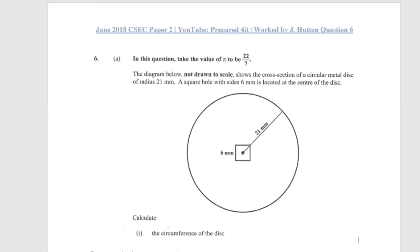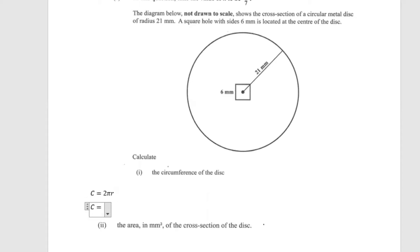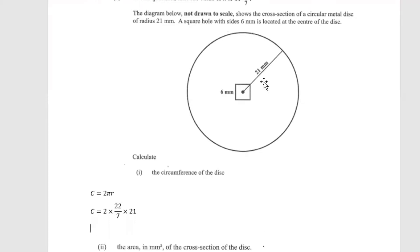Part one asks us to calculate the circumference of the disc. The formula for circumference is: circumference equals 2 pi r. So therefore, circumference is equal to 2 multiplied by 22 over 7, multiplied by the radius of 21 millimeters.